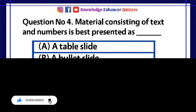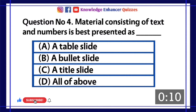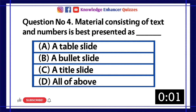Question number 4. Material consisting of text and numbers is best presented as: A. A Table slide. B. A Bullet slide. C. A Title slide. D. All of the above. Option A is the right answer.